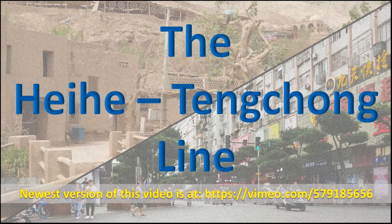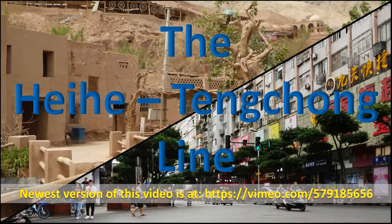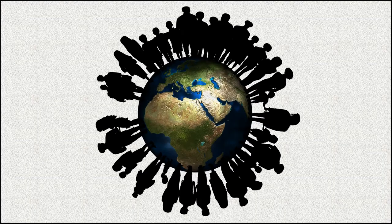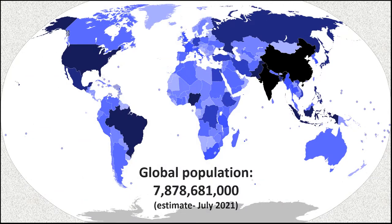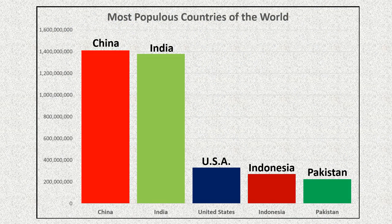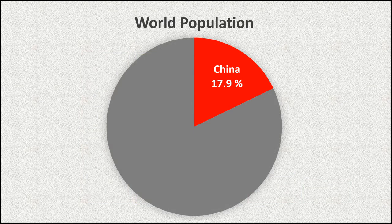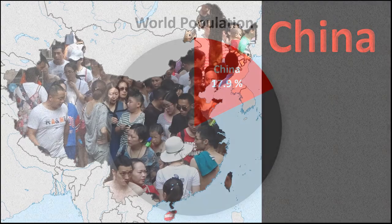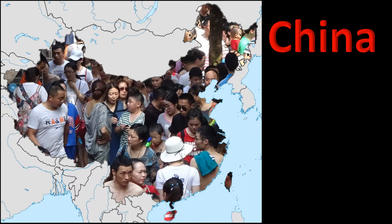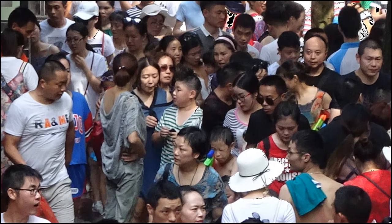The Heihe-Tongchong Line. The Earth is home to almost 8 billion people, but for a variety of reasons, the population is not evenly distributed around the globe. China is the most populous country in the world, with India a close second. China makes up almost 18% of the global population. But where in China do all these people live?